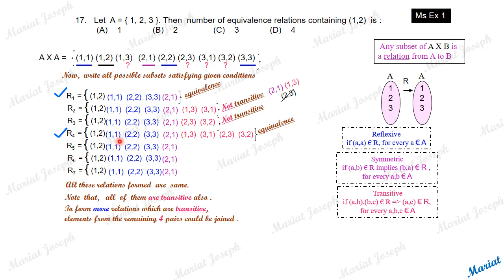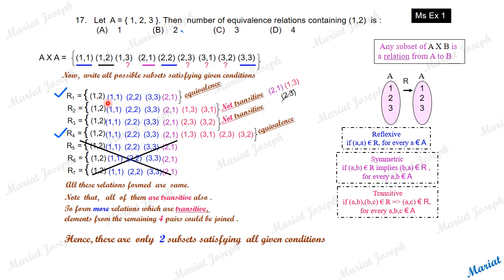So what did we find? We put one pair — not an equivalence relation. We put the other pair — not an equivalence relation. We put both pairs together (all 4) — it is an equivalence relation. Hence, we can find only two equivalence relations in which (1,2) is a must. The answer is 2.